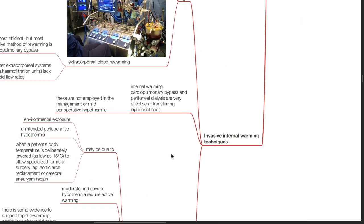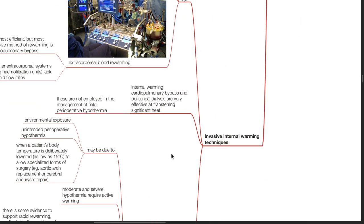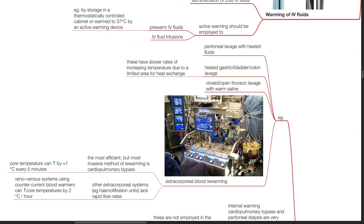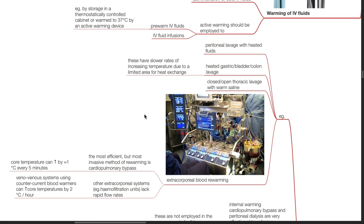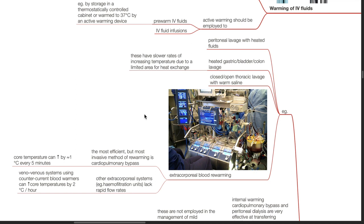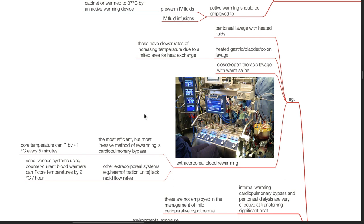Invasive internal warming techniques include peritoneal lavage with heated fluids, heated gastric, bladder, or colon lavage. These have slower rates of increasing temperature due to a limited area for heat exchange. Closed or open thoracic lavage with warm saline, or extracorporeal blood re-warming are also options. The most efficient but most invasive method of re-warming is cardiopulmonary bypass. Core temperature can increase by 1 degree Celsius every 5 minutes.